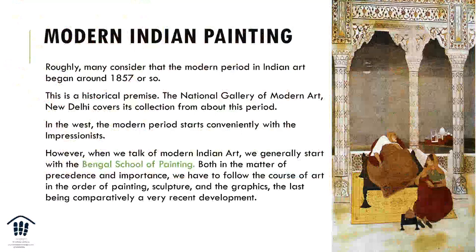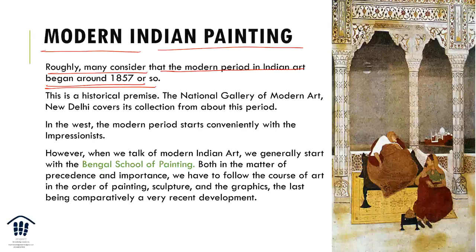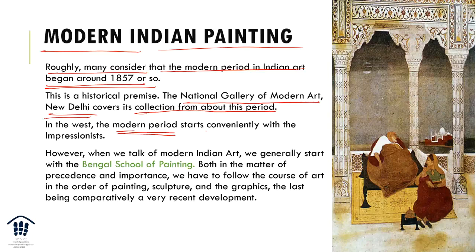Modern Indian painting is broadly considered to have begun around 1857 — this is a historical premise. The National Gallery of Modern Art in New Delhi covers its collection from about this period. The modern period conveniently starts with the Impressionists. When we talk about modern Indian art, we look at the Bengal school, and both in terms of precedence and importance we follow the course of art in the order of painting, sculpture, and graphics.